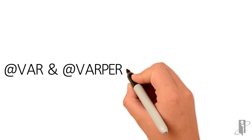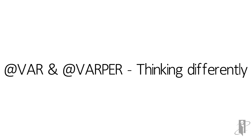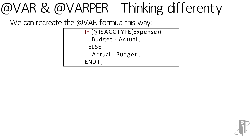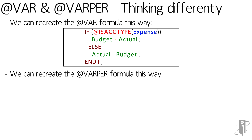Here's another way to think about it. If you didn't have ATVAR and instead used the ISACCOUNTTYPE function, the ATVAR recreation is straightforward: if ISACCOUNTTYPE is EXPENSE, then it's Budget minus Actual; if it's not an expense — meaning every other account in the account dimension — it's Actual minus Budget.